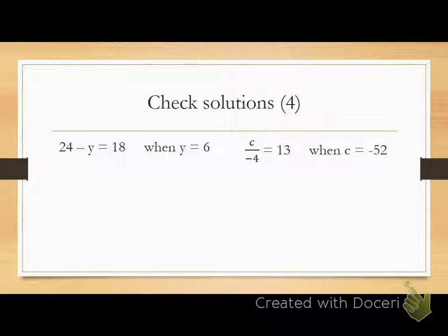Now, the next four questions involve testing solutions. We are not coming up with the solution, but we are testing these solutions to see whether or not they actually work out. And before you do that, I'm actually going to make a quick change to one of the problems. Okay, that's better. So go ahead and solve these two. 25 minus y equals 18 when y equals 6, and c divided by negative 4 equals 13 when c equals negative 52.